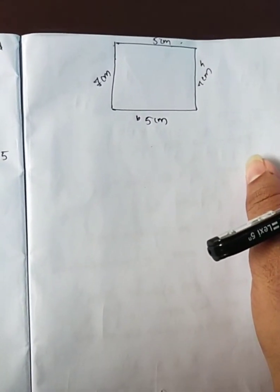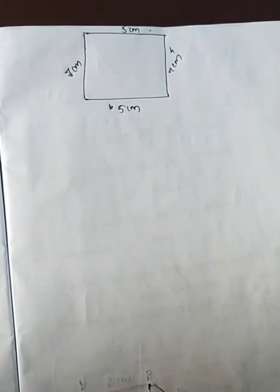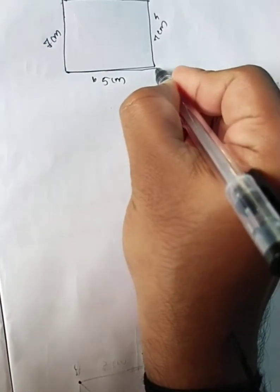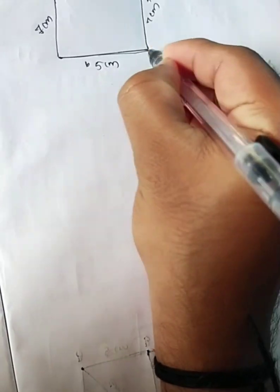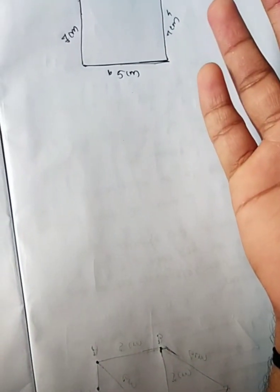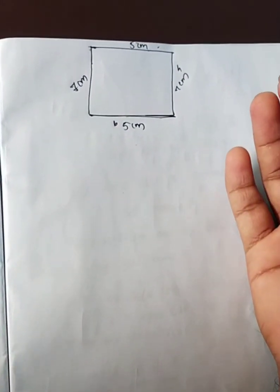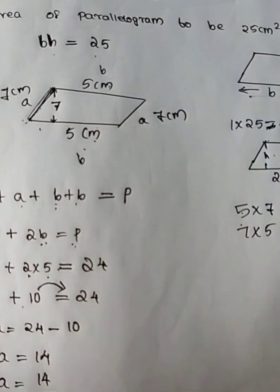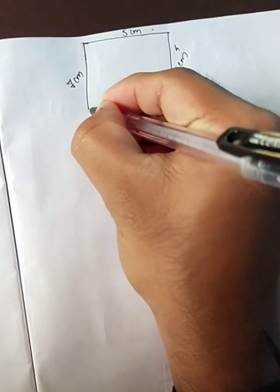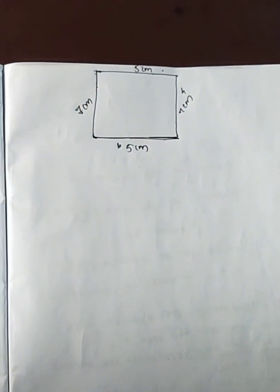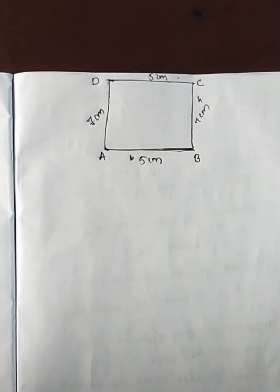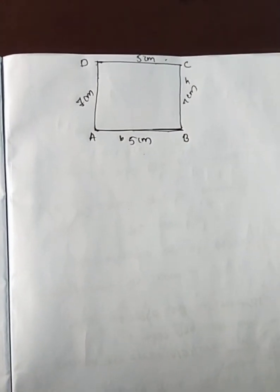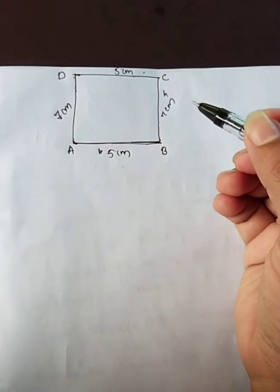I have to switch to the left side now. Let's take the right side. One side is the left side, the right side is the right side. The corners are labeled A, B, C and D.